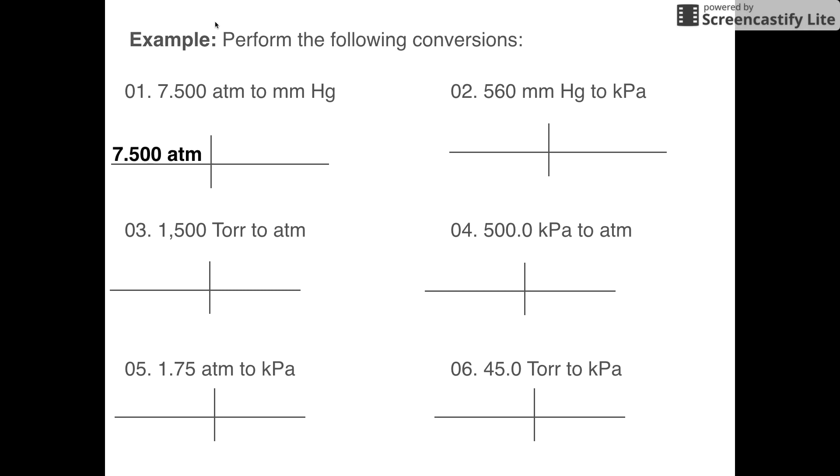I gave you the conversion factors. All of them are equal to each other. I want to go from atmospheres to millimeters of mercury. So remember, one atmosphere is equal to 760 millimeters of mercury. Why did I set up my conversion factor that way? Because I want my atmospheres to cancel. Then notice I'm left with the unit millimeters of mercury. When I do that out, plug it into your calculator, you get 5,700 millimeters of mercury. That would be my answer.